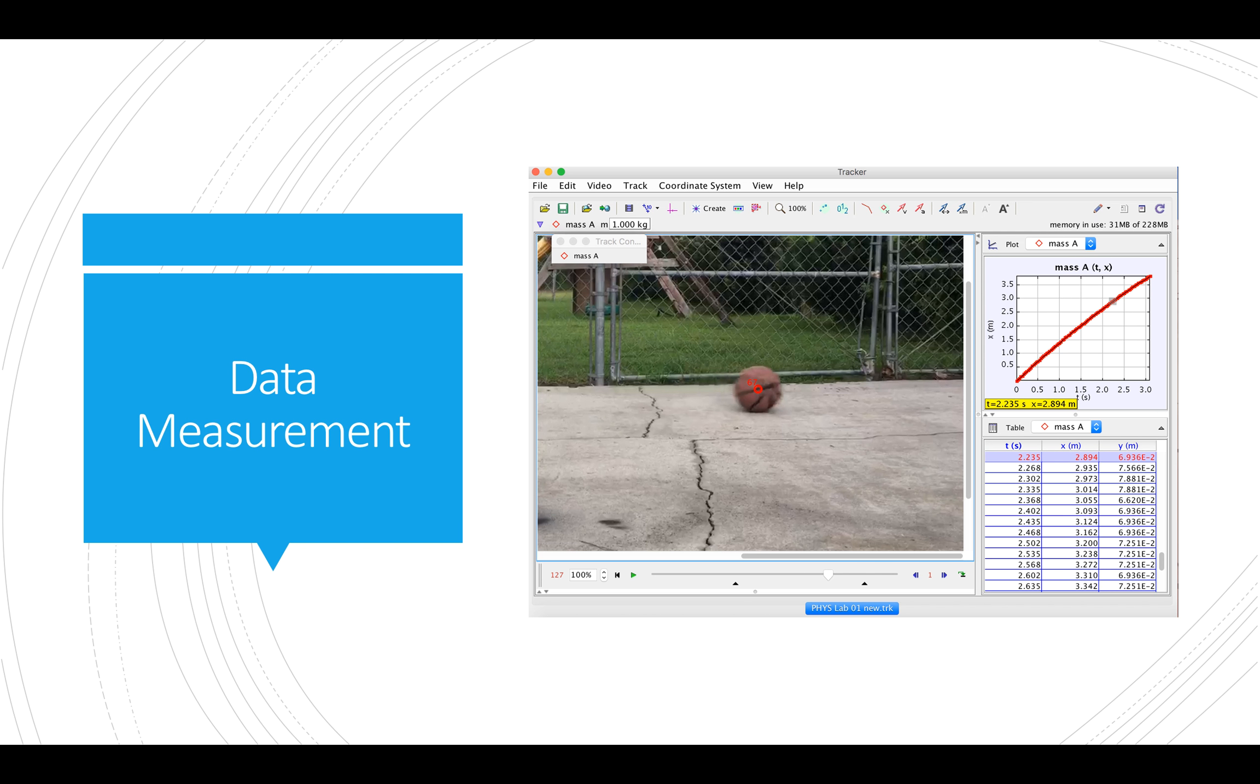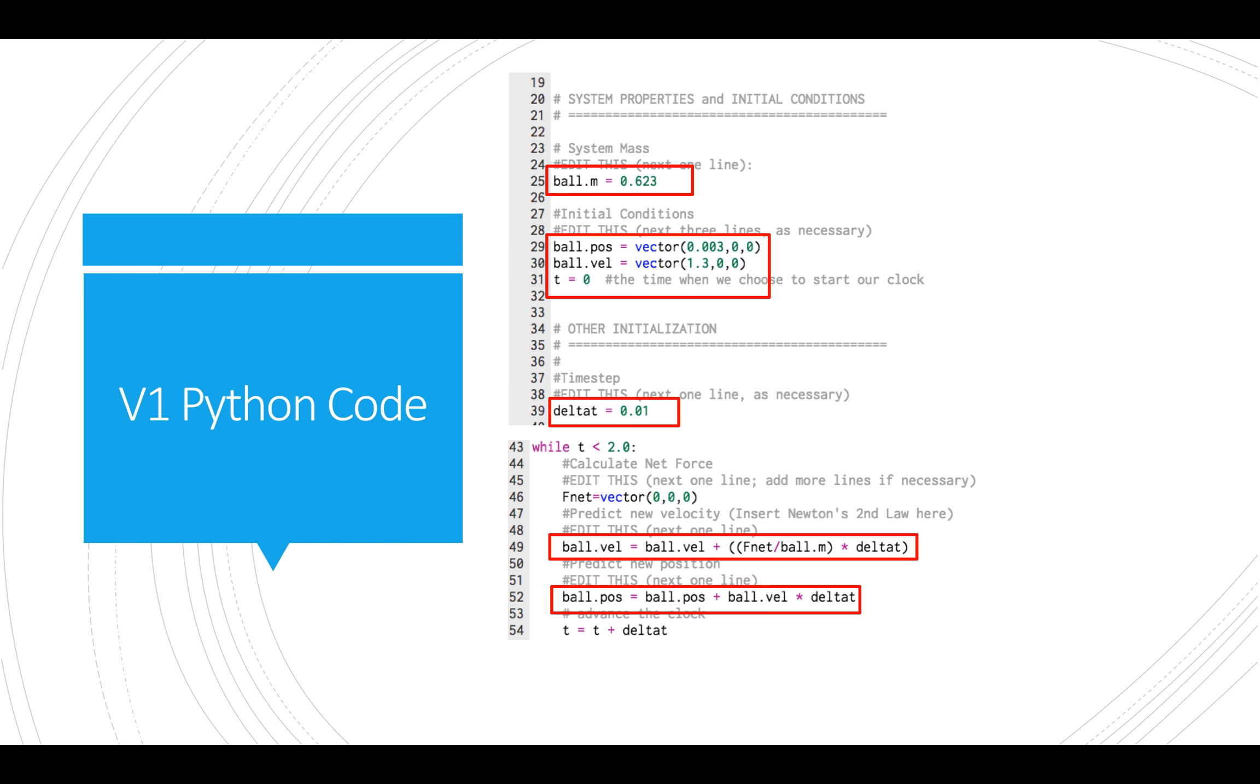The Python code for the computational model was adjusted slightly to reflect the experimental condition. The mass of the ball was changed along with the initial position and initial velocity vectors. The time step was changed to 0.01 seconds because a small time step is good for accurate data collection. The net force vector was 0 and Newton's second law was used to calculate the velocity of the ball. The position update formula was used to calculate the ball's final position as seen in the last box.